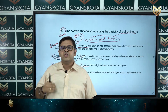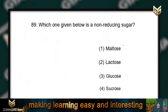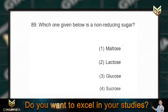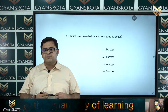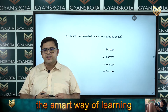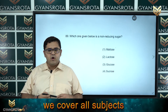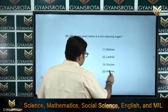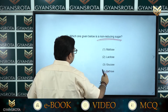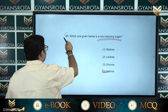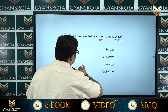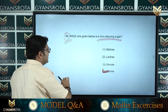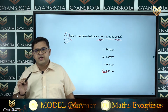Question number 89: which one of the following is a non-reducing sugar? This comes from the biomolecule chapter of class 12 NCERT. Option number 4 is sucrose, which is a non-reducing sugar. Option number 4 is the correct answer of question number 89 — a direct concept from the biomolecules chapter.